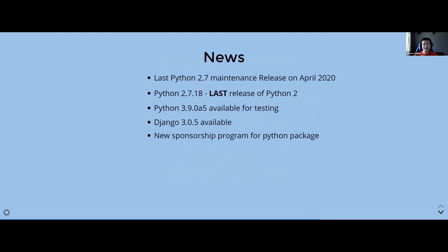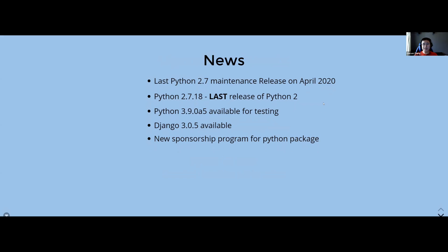In the news: the last Python 2.7 maintenance release is this month — we just had the very last release, which is 2.7.18. After this, farewell Python 2.7. If you haven't upgraded, please do so, or you'll have to maintain it yourself. Python 3.9 Alpha 5 is available for testing, Django 3.0.5 is available, and the Python community has a new sponsorship program for Python packages.